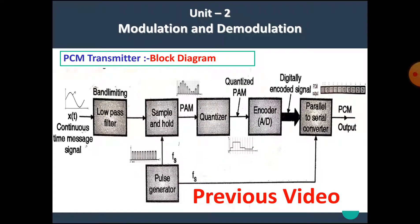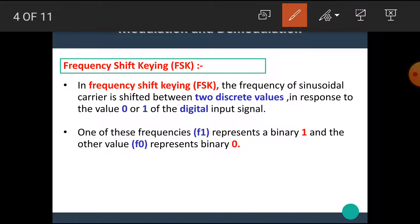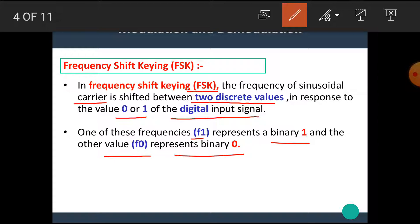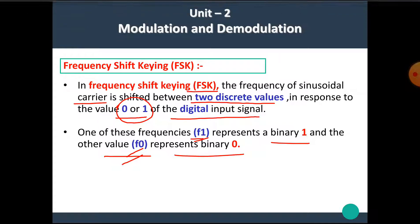In this video, we are going to see the frequency shift keying modulation technique. In frequency shift keying, or FSK, the frequency of a sinusoidal carrier is shifted between two discrete values in response to the value 0 or 1 of the digital input signal. One of these frequencies, F1, represents binary 1, and the other value, F0, represents binary 0. That means frequency shift keying is a digital technique of modulation.